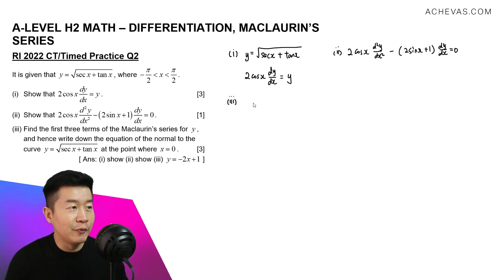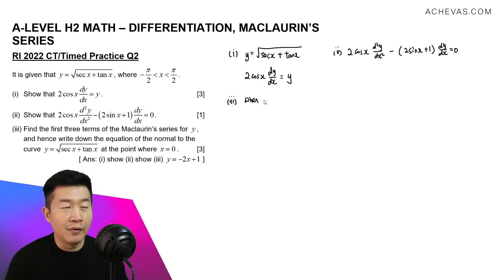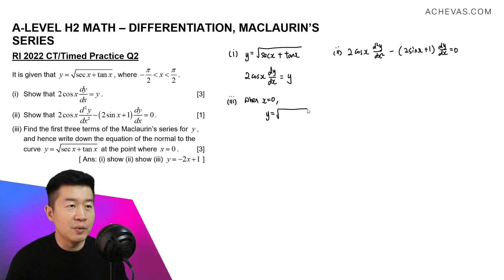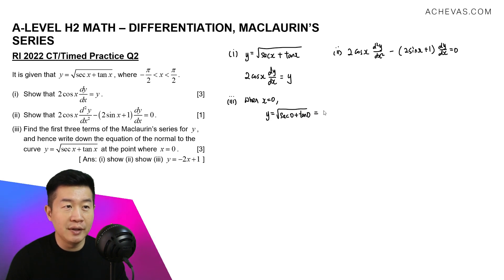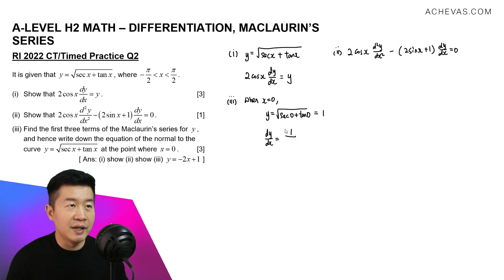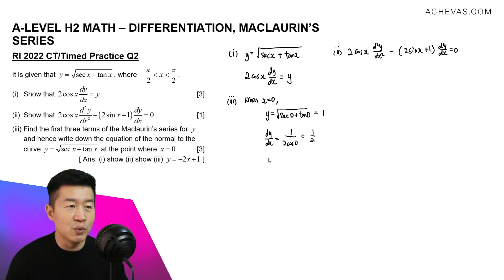In the last part, let's try to find the Maclaurin series. We need to work out the coefficients by letting x equal 0. When x = 0, y equals the square root of secant 0 plus tangent 0. Secant 0 is 1, tangent 0 is 0, so y equals the square root of 1, which gives y equal to 1. For dy/dx when x = 0, it equals y divided by 2 cosine x, which is 1 divided by 2 cosine 0, giving 1 over 2.